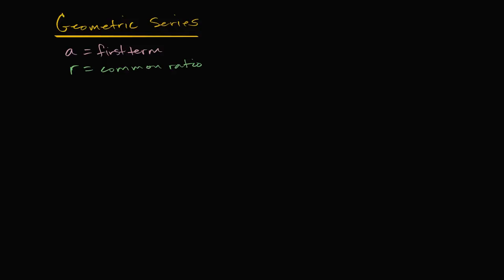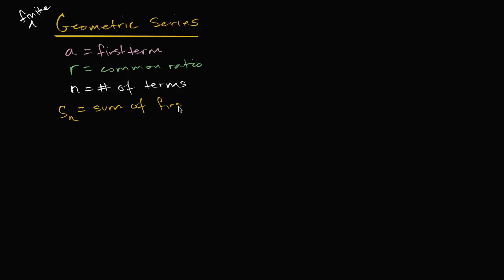We also know that it's a finite geometric series, so it has a finite number of terms. Let's say that N is equal to the number of terms. We're going to use the notation S sub N to denote the sum of the first N terms. The goal of this whole video is, using this information, to come up with a general formula for the sum of the first N terms — a formula for evaluating a geometric series.